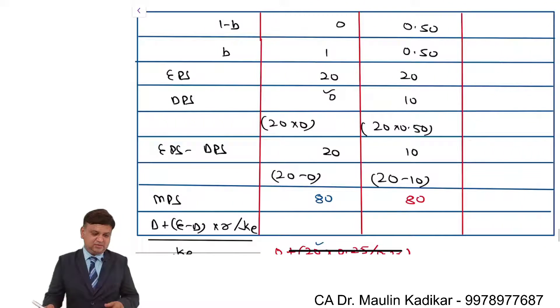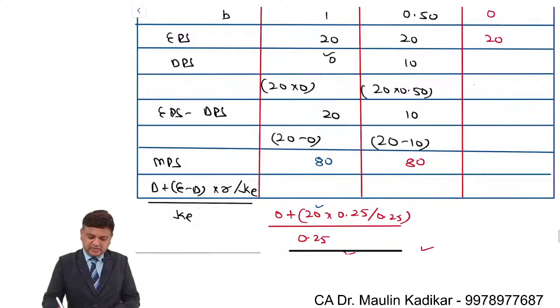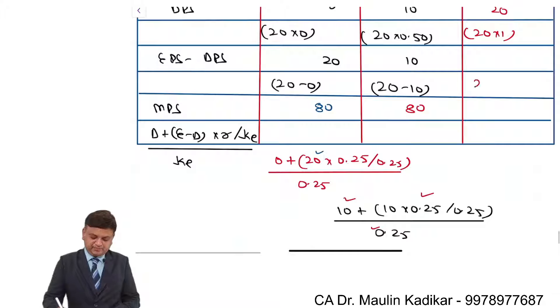In the last case, we have the retention ratio as 1, dividend payout ratio as 0. This is 20. So 20 into 1, that is 20 itself. 20 minus 20, it is 0.